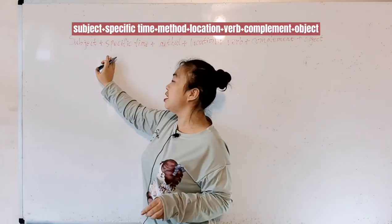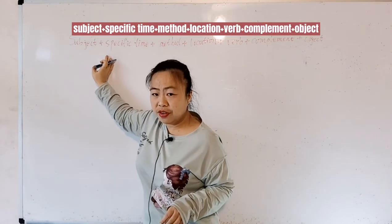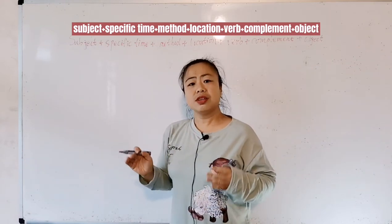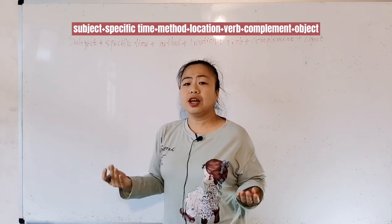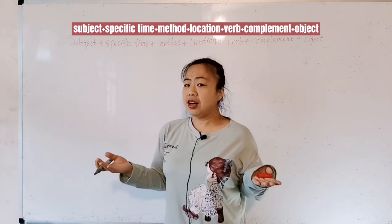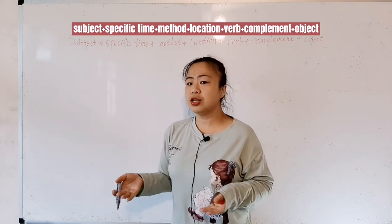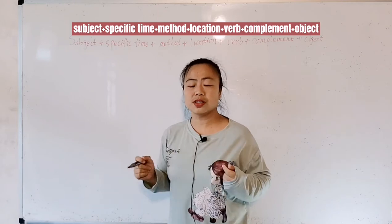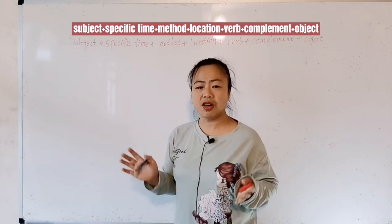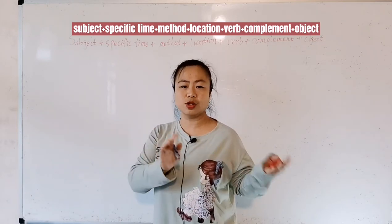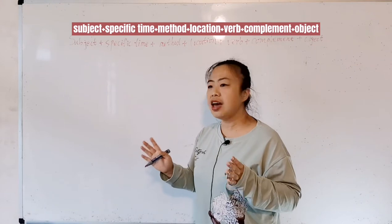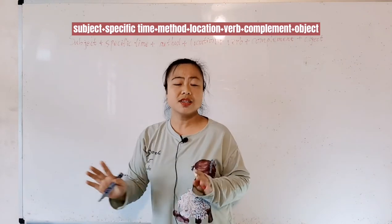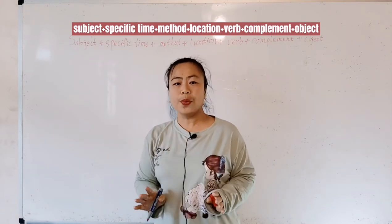Basically, this is a sentence structure for HSK-1 to HSK-3, but many students when they go to a higher level like HSK-4, HSK-5, or even when they become an English-Chinese translator, they still have problems with Chinese sentence structure. So in that case, they have to come back to this basic sentence structure. So this is very important.